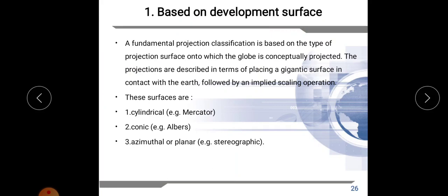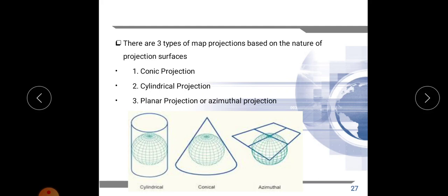A fundamental projection classification is based on the type of projection surface onto which the globe is conceptually projected. The surfaces on which we project our globe are cylinder (cylindrical), cone (conic projection), and plane (azimuthal or planar). An example of a cylindrical map projection is the Mercator projection; for conic, it is the Albers projection; and for planar or azimuthal, it is the stereographic projection.